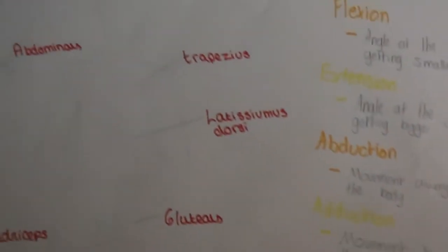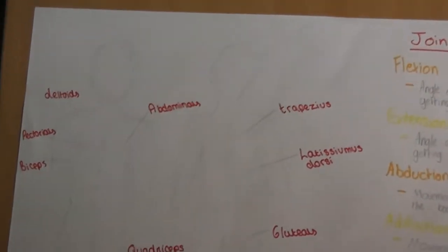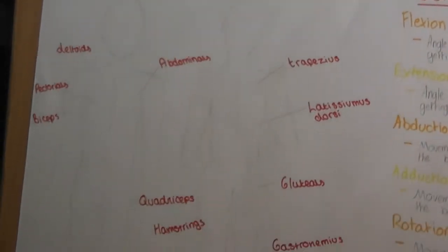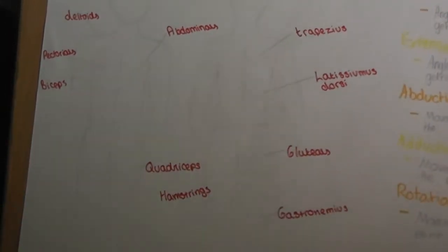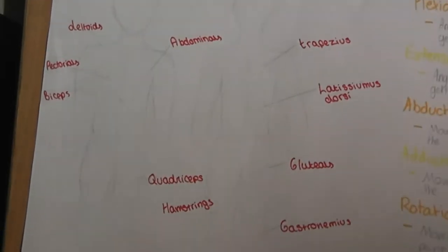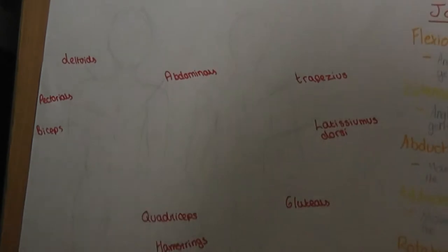Here are some diagrams of the muscles in the body, labelled to show where they are, with their location in the body.